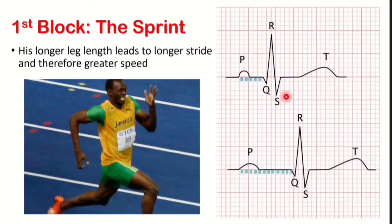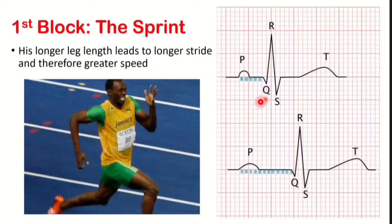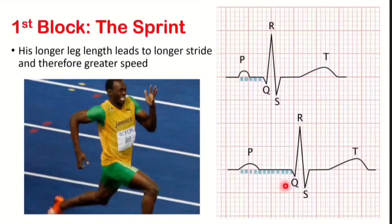Here we have a normal rhythm showing a PR interval of 5 little boxes. Below it, we have a first degree block where the PR interval is an exaggerated 11 little boxes long, like the longer steps Usain Bolt takes.